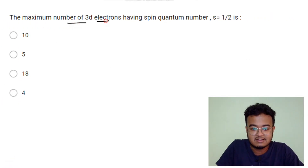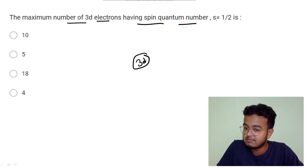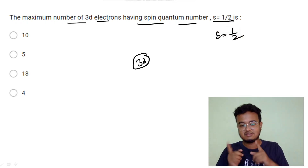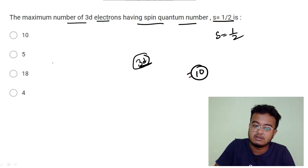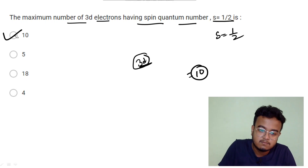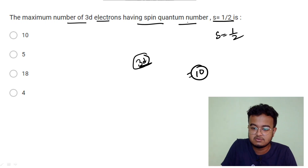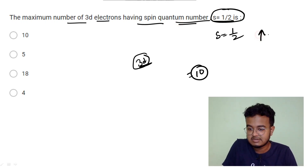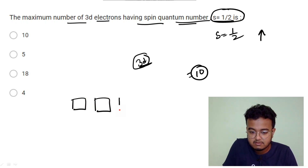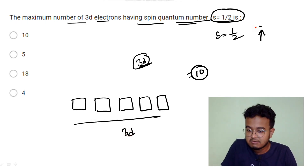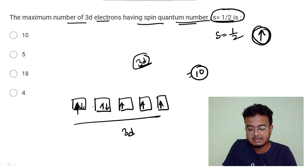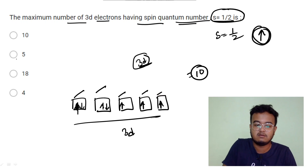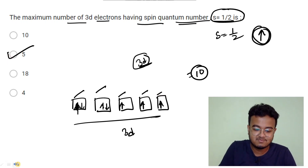Next: the maximum number of 3d electrons having spin quantum number s equal to plus half. 3d is the maximum electron count. The d orbital has a maximum of 10 electrons total. With spin quantum number s equal to +½ (spin up), there are 5 such electrons — each of the 5 d orbitals holds one electron with spin up before pairing.